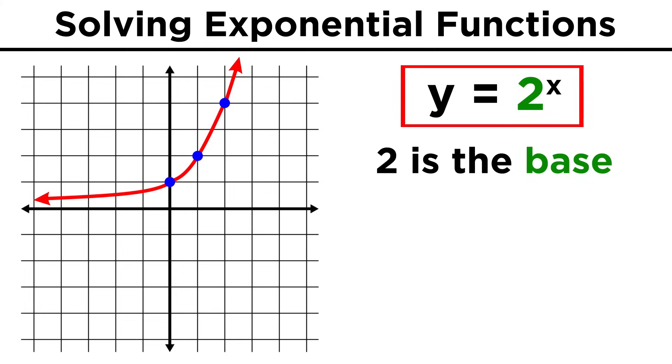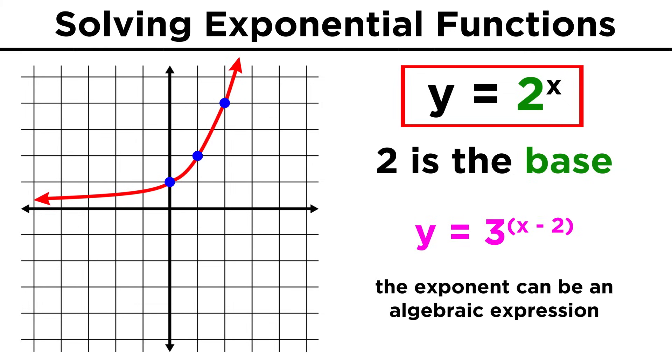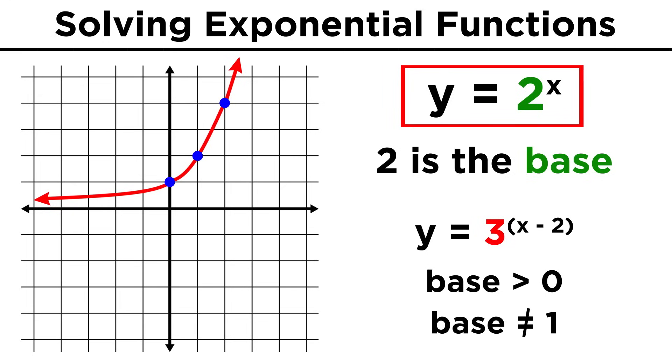This number that is raised to the exponent is called the base, and changing the base will produce different exponential functions. We could have ten to the x, which will increase by an order of magnitude every time x increases by one. The exponent can also be an expression, like with three to the quantity x minus two. The only parameter is that the base must be positive and not equal to one.